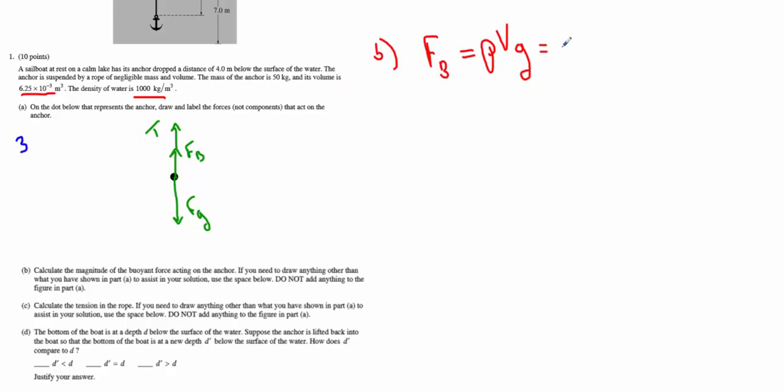We can plug in and solve. Make sure you include units. We've got 1000 kilograms per cubic meter, a volume of 6.25 × 10^-3 cubic meters, and I'll use 10 meters per second squared for g. Typing this into the calculator gives a buoyant force of 62.5 Newtons. If you use 9.81 for gravity, you'll get a slightly lower answer. Remember, 10 for g is perfectly fine to use on the AP exam.